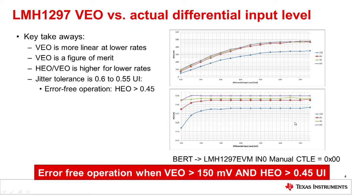I used a BERT and changed its differential voltage swing, then measured VIEW and HUE as reported by the device. VIEW is a post-equalized amplitude and it is just a figure of merit. As shown in the graph, it is linear up to a certain point and it does not have a one-to-one correlation with the incoming signal. Overall, as long as we are above 150 millivolts, we should be able to operate error-free. Note that VIEW is more linear for lower data rates.